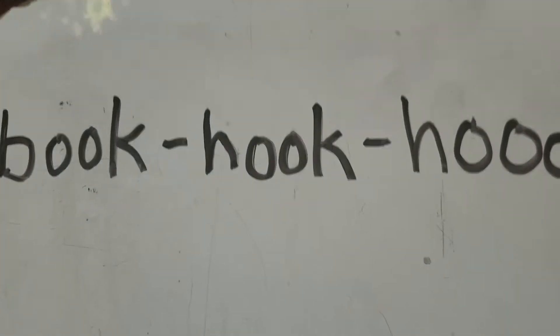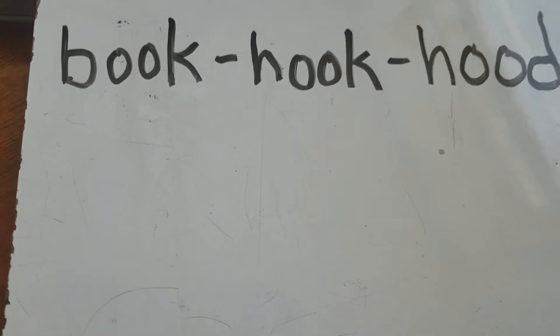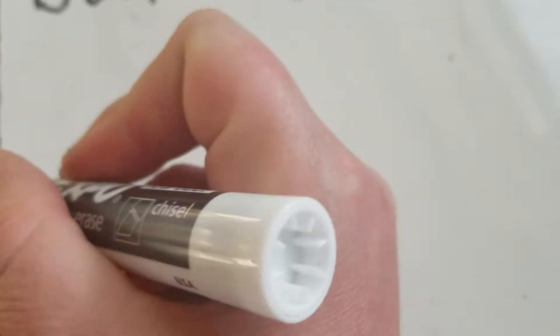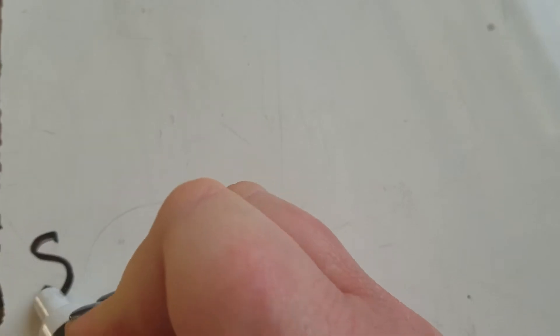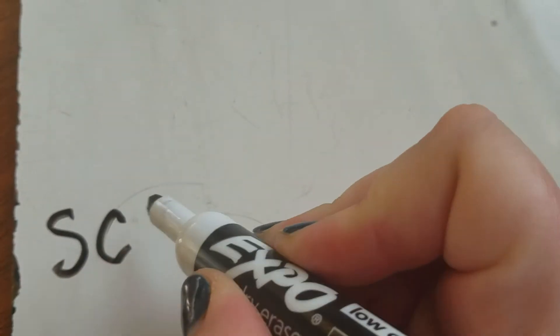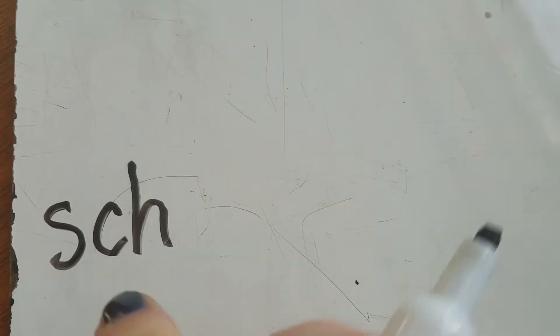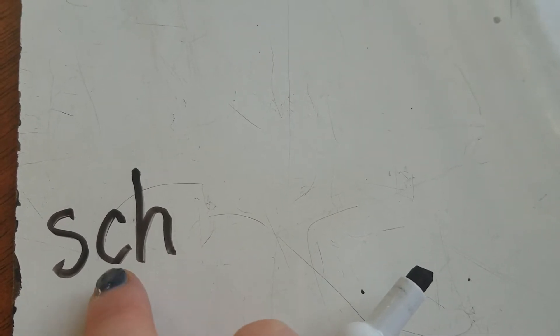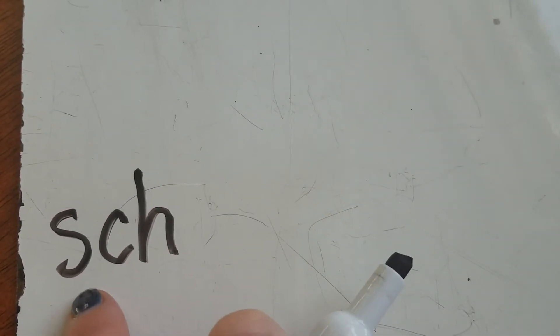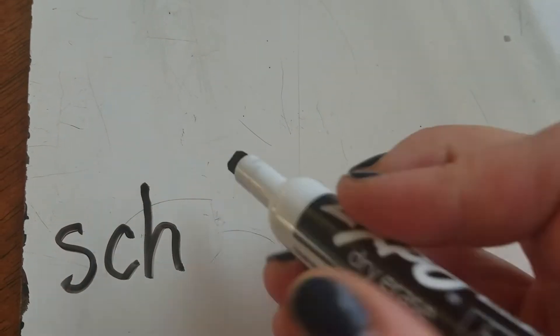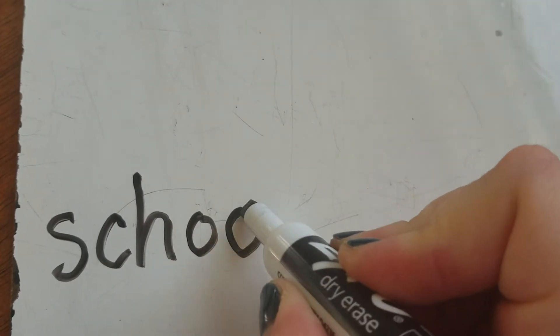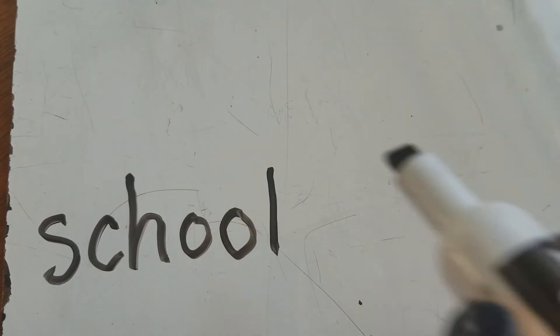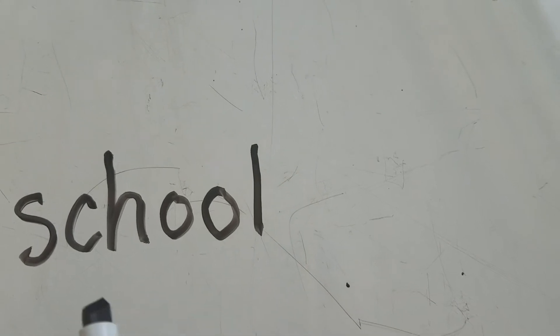Alright, let's look at our OO for school. School is a trick word because we have the 'ss, kuh' sound, but it has a C-H in it. Normally C-H says 'ch,' but here it's 'ss, kuh, uuul' — the H is kind of silent. School.